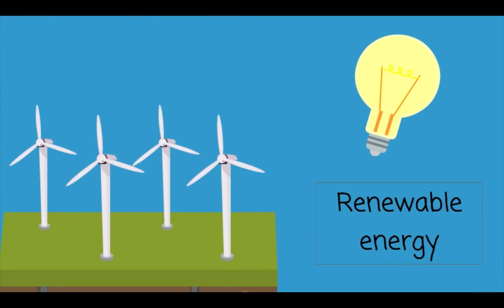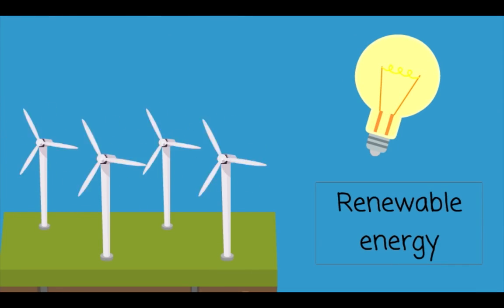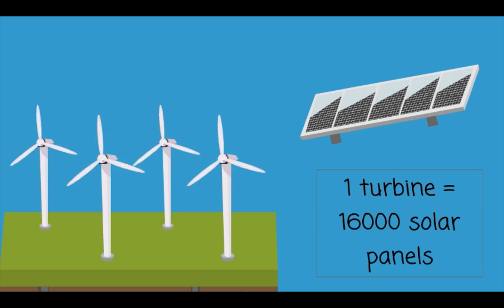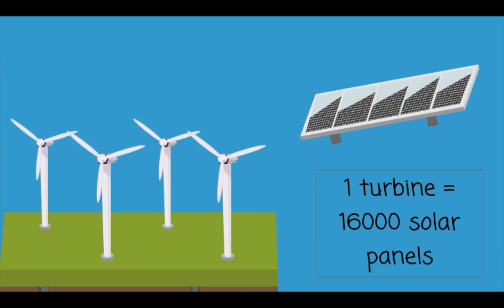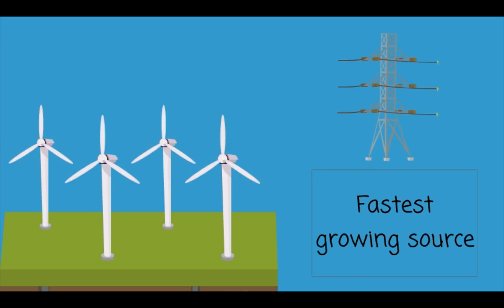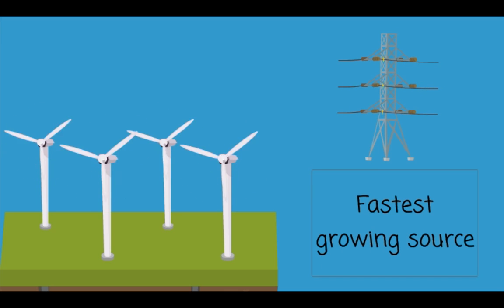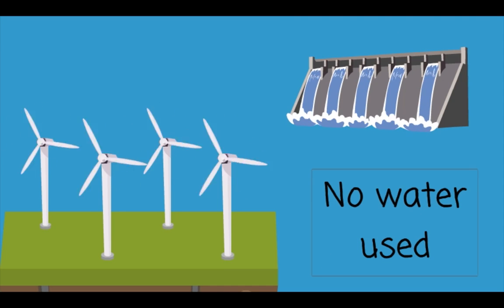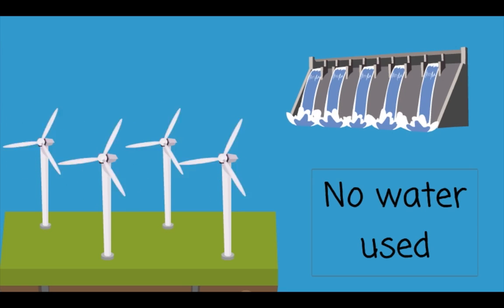Wind turbines are a great source of renewable energy. One turbine generates the same amount of power as 16,000 solar panels. Wind power is currently the fastest growing source of electricity production in the world. Unlike nearly every other form of energy, wind power uses virtually no water.